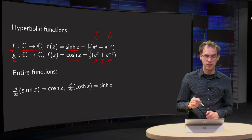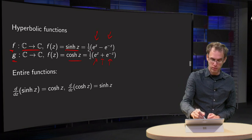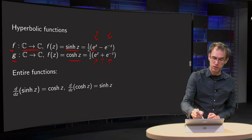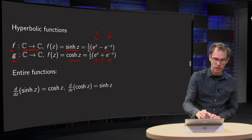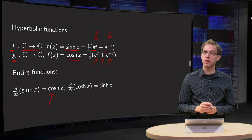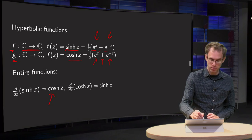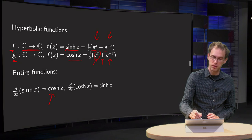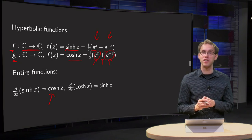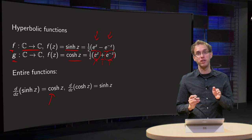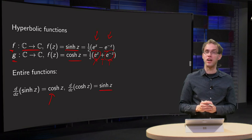If you differentiate the sine hyperbolic, you get one half e to the power of z — from the minus term you get a minus, so you get plus e to the power of minus z — which gives you the cosine hyperbolic. And if you differentiate the cosine hyperbolic, e to the power of z remains the same, and e to the power of minus z gives you minus e to the power of minus z, which equals the sine hyperbolic of z.